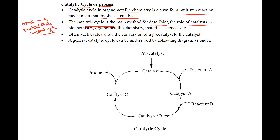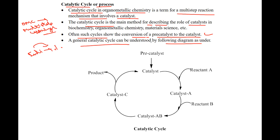The catalytic cycle tells us exactly the role of the catalyst. Often some cycles show conversion of a precatalyst to a catalyst. This cycle also tells us that the catalyst was in its initial form when the reaction started — conversion from precatalyst to catalyst. A general catalytic cycle can be understood by the following diagram.